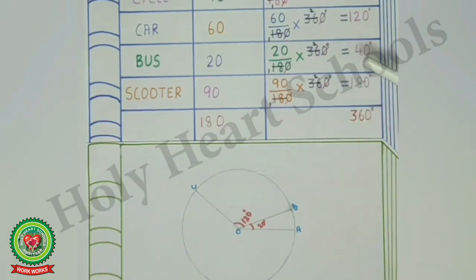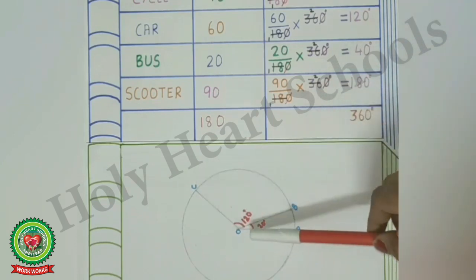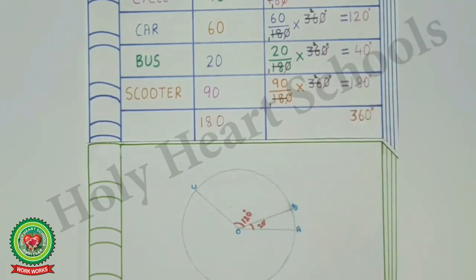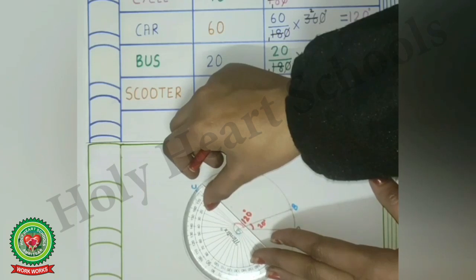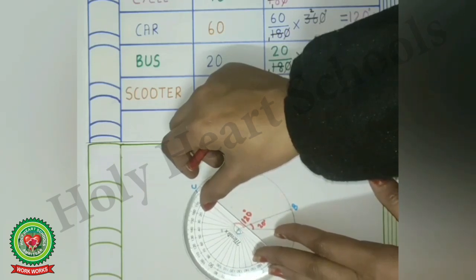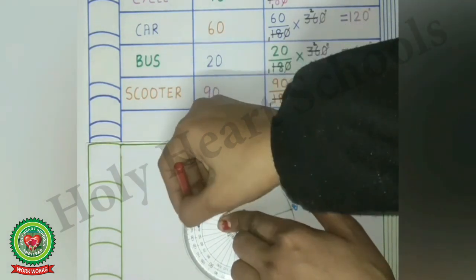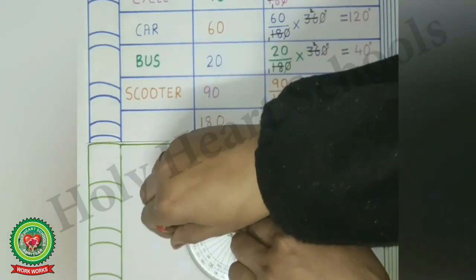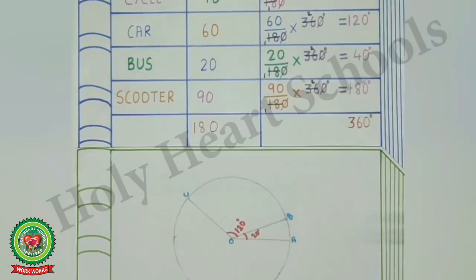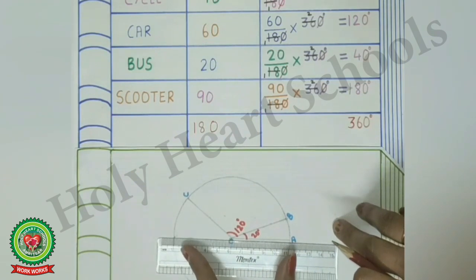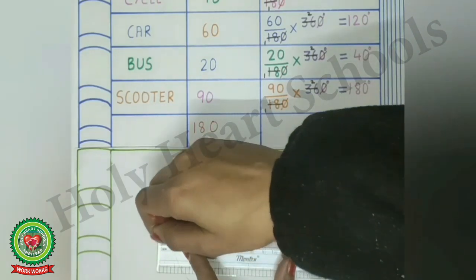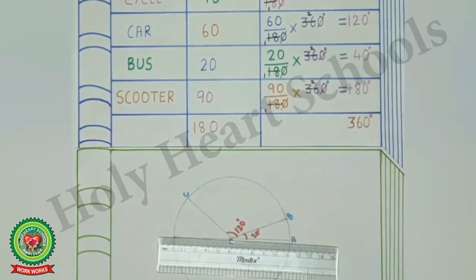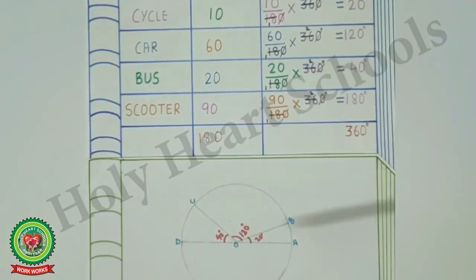The next angle is 40 degrees, with OC as the base line and O as the center point. Place the protractor at point O, match the base line, mark 40 degrees with a dot, and join this dot with O using a scale. The new base line is now OD.